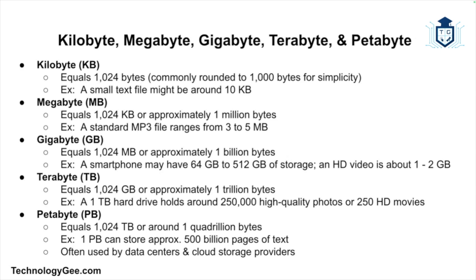The megabyte is 1024 kilobytes, or roughly 1 million bytes. A standard MP3 song file might range from three to five megabytes. The gigabyte is 1024 megabytes, or around 1 billion bytes. Most smartphones today have storage capacities ranging from 64 gigabytes to 512 gigabytes, and a standard hour-long HD video could be approximately one to two gigabytes in size.